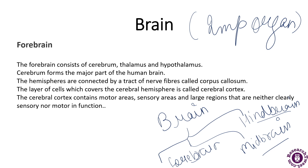The forebrain is the interior part of the brain which consists of the cerebrum, hypothalamus, and the thalamus. The cerebrum forms the major part of the human brain. The hemispheres are connected by a tract of nerve fibers called the corpus callosum. The layer of cells covering the cerebral hemisphere is called the cerebral cortex, which contains motor areas, sensory areas, and large regions that are neither clearly sensory nor motor in function.